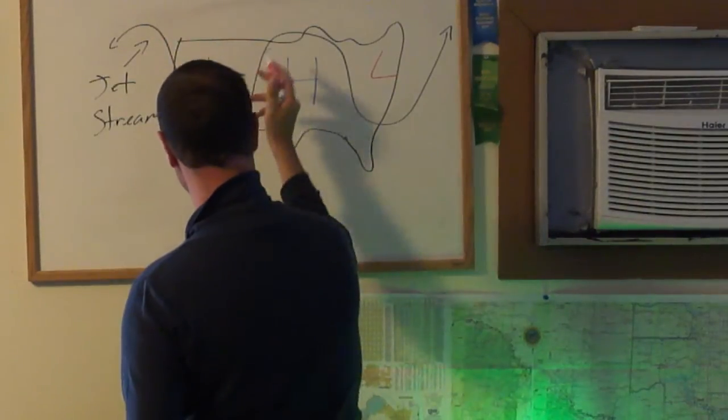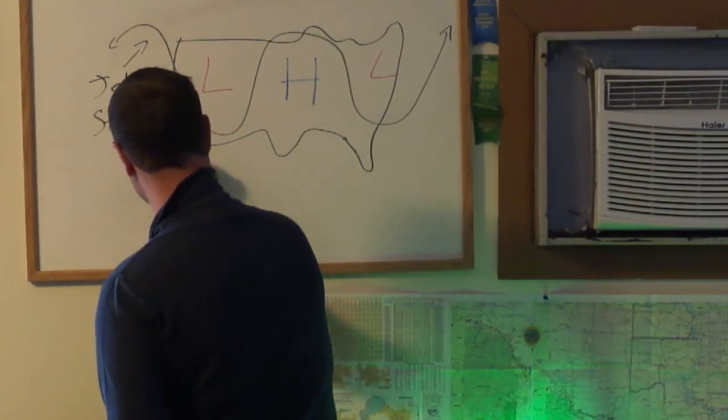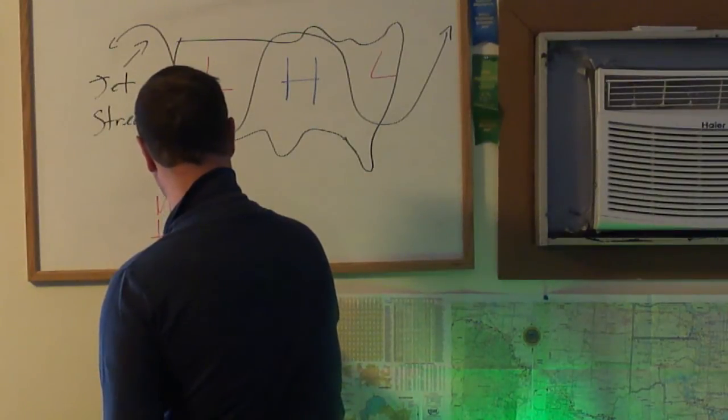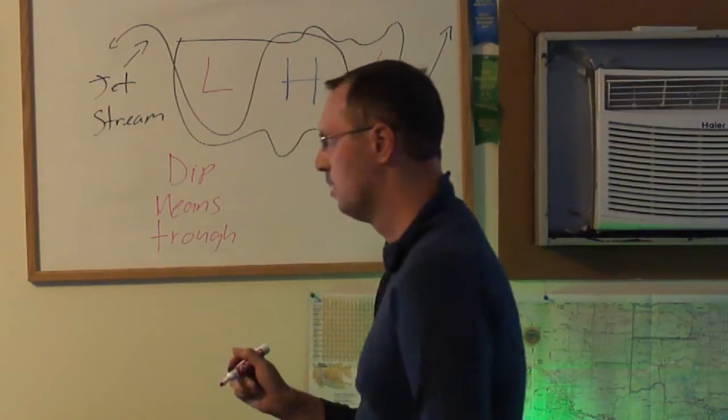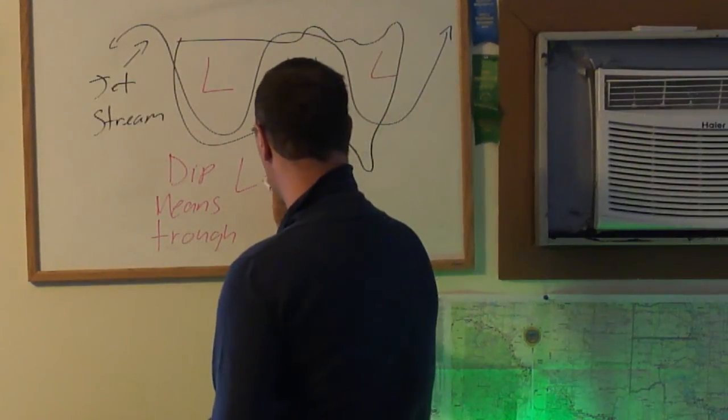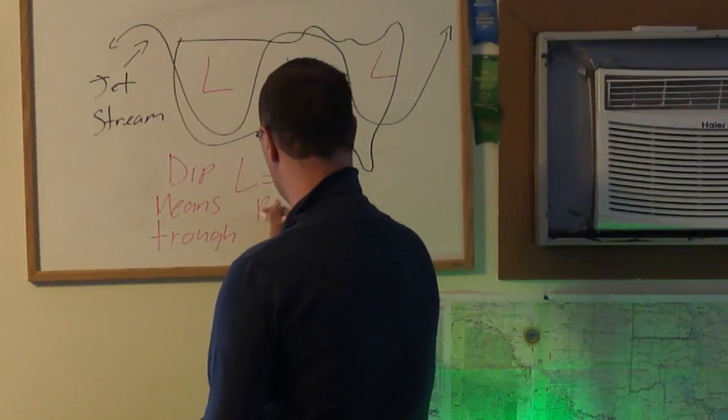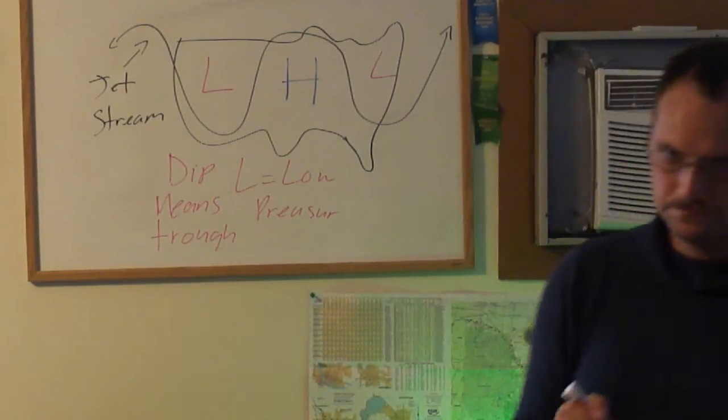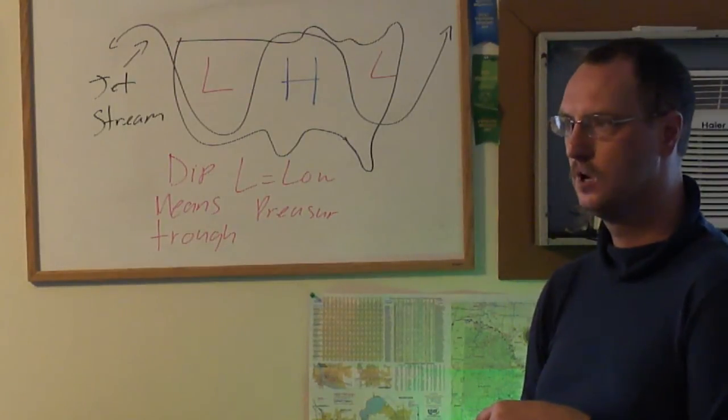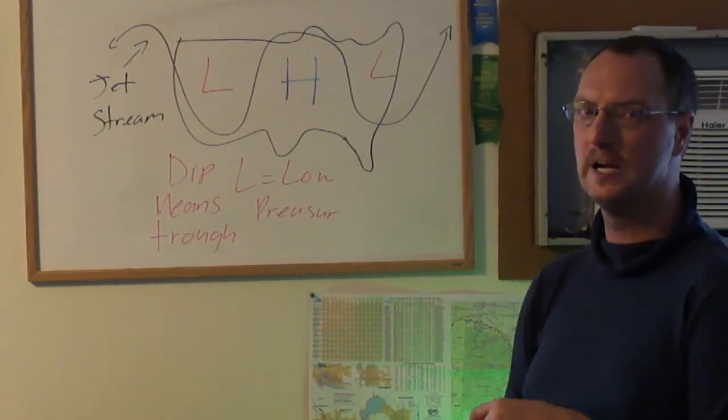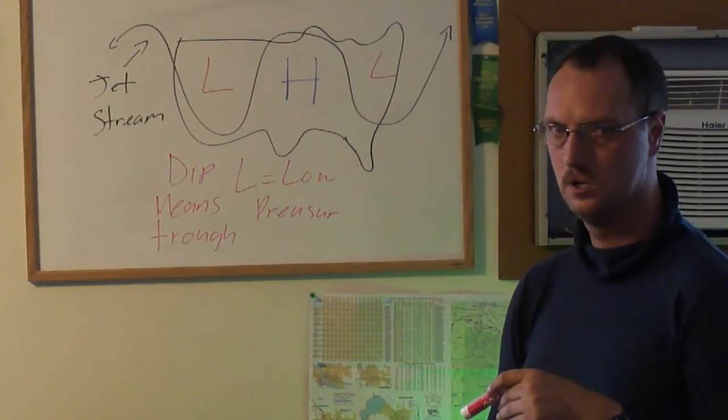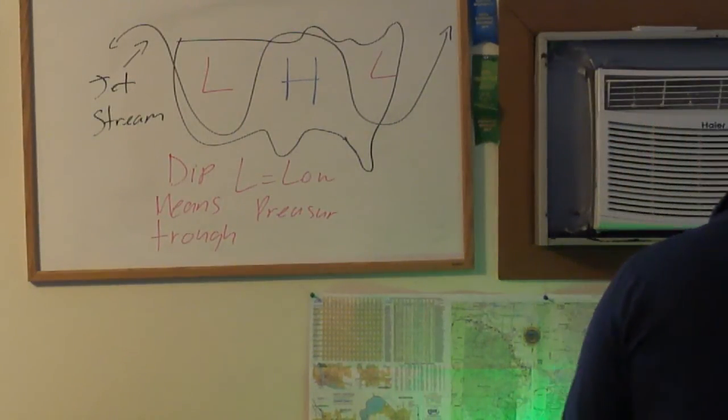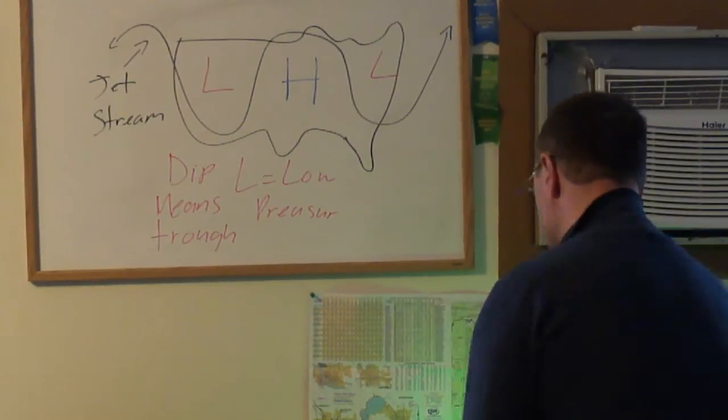In the jet stream, the jet means trough. And the L, L is equal to low pressure. Now the low pressure is air rising in the atmosphere, rising in the clouds and stuff, and it means rain. So let me give you that definition.